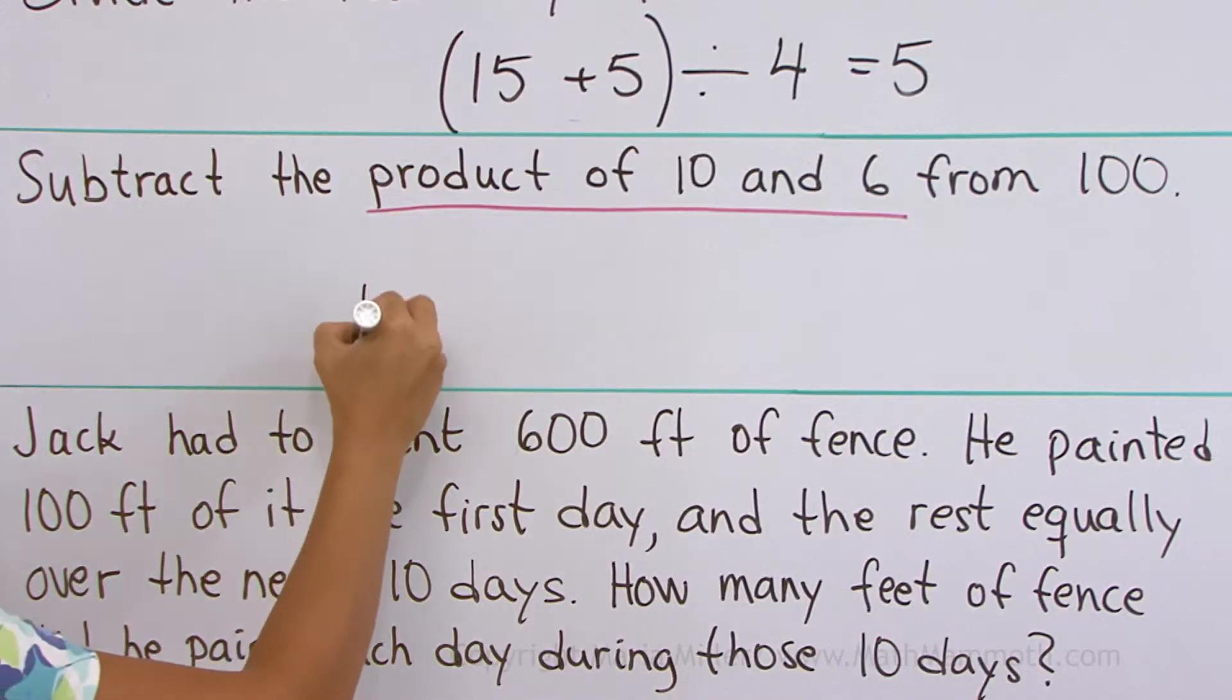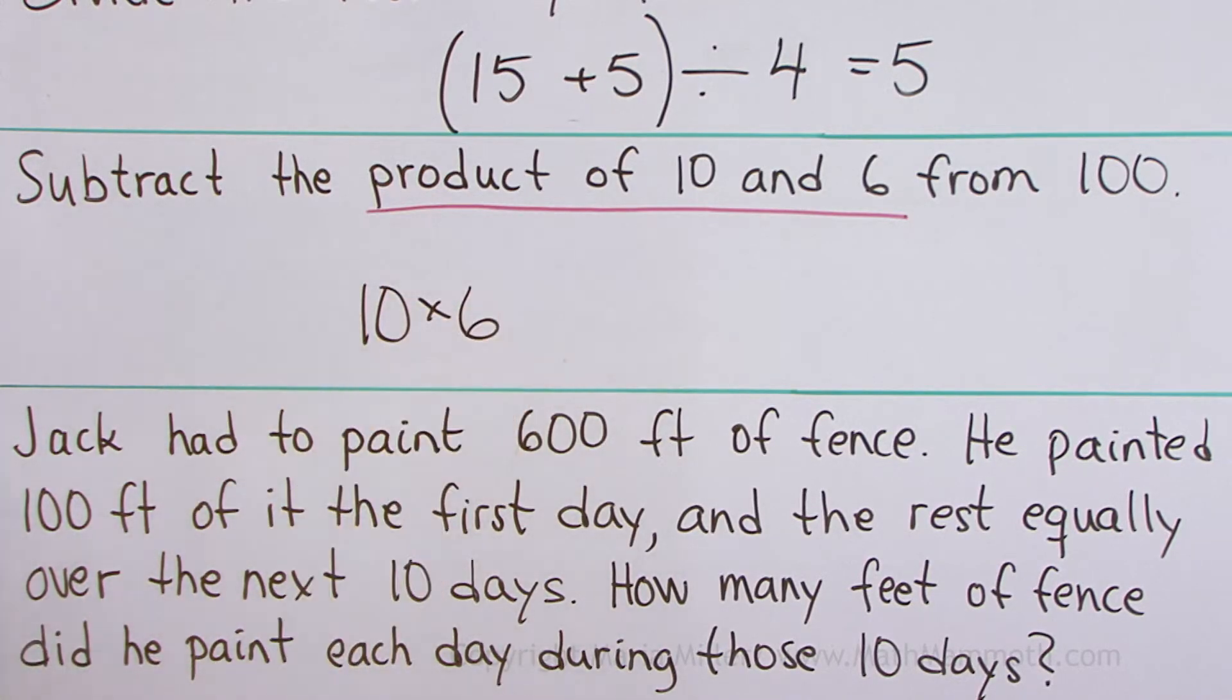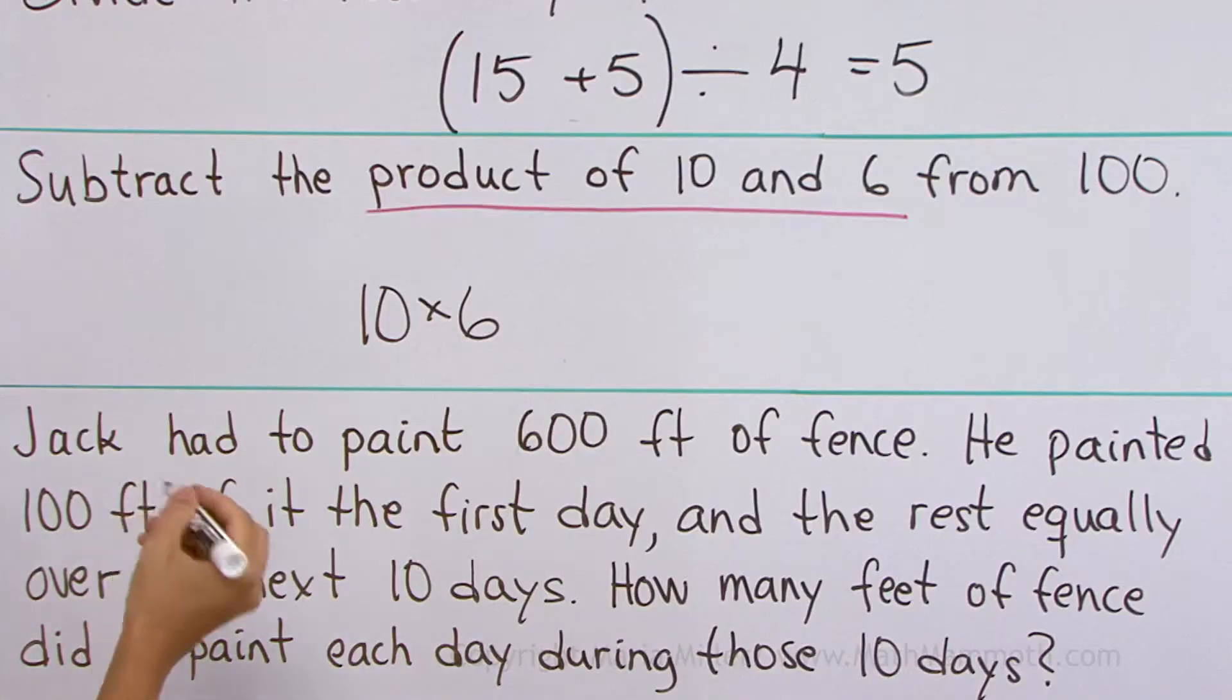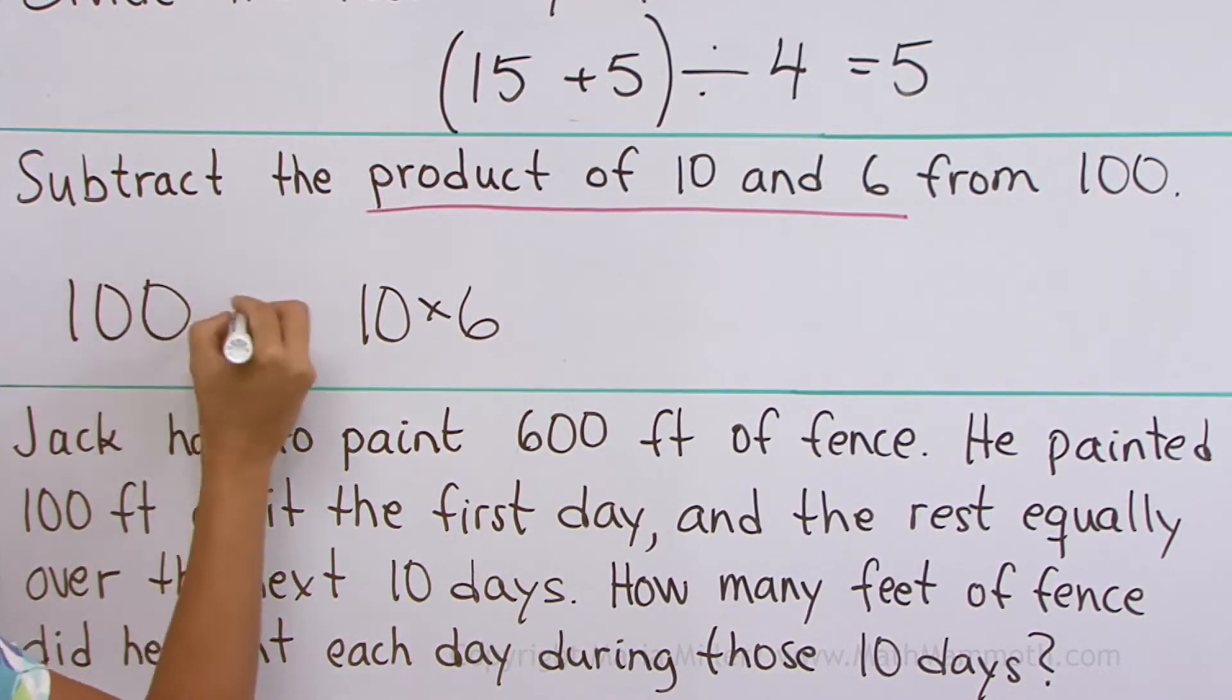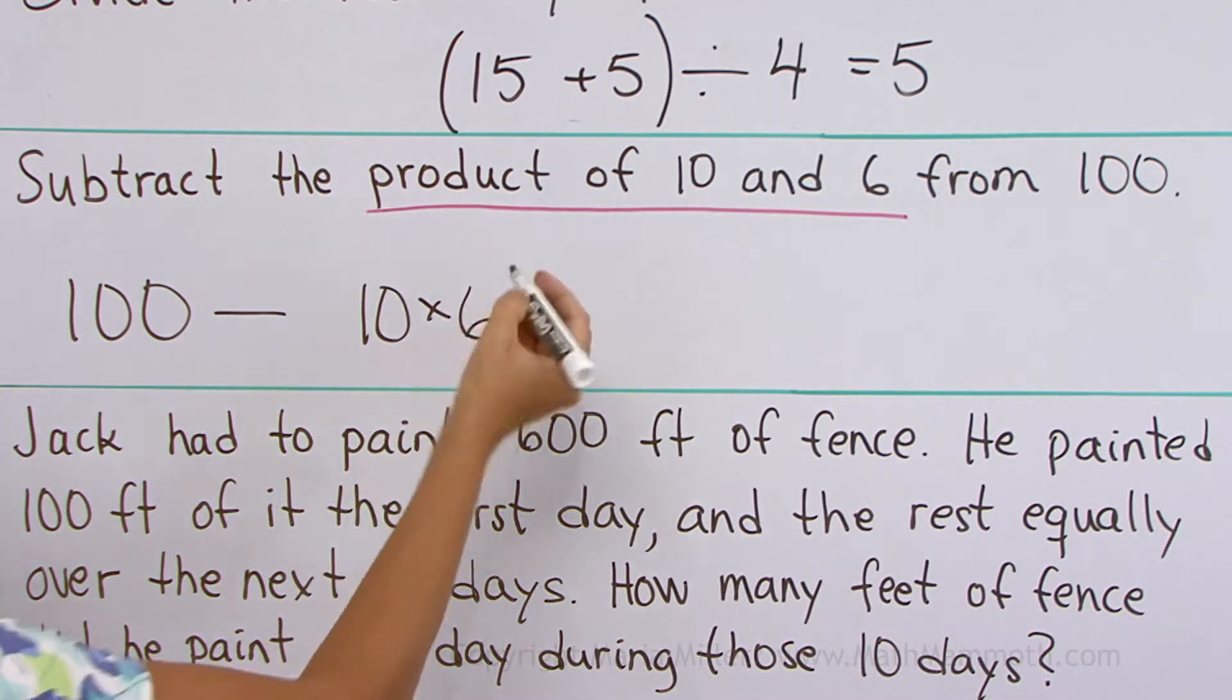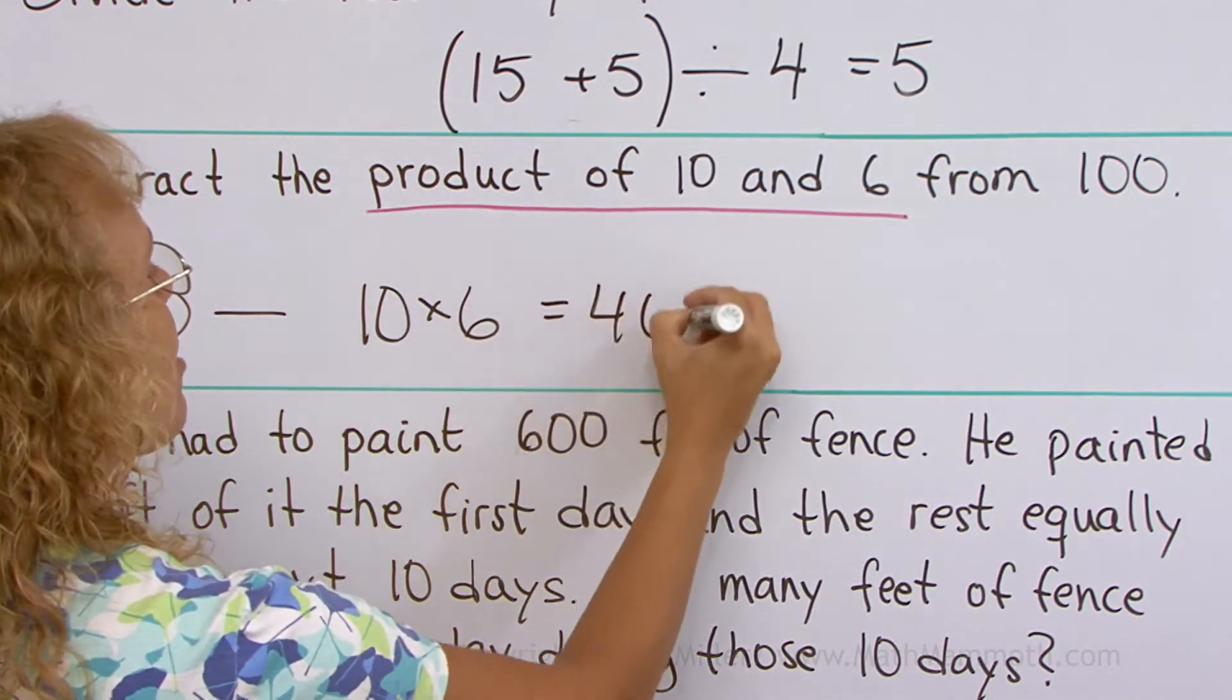So let me write that here. 10 and 6, they're multiplied. It's 60. Subtract that from 100. How would you write that? Since you're subtracting from 100, you put it here. 100 minus that, okay? And the multiplication is done first by the order of operations. So we get 100 minus 60 equals 40.